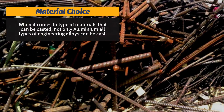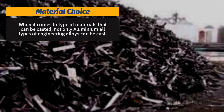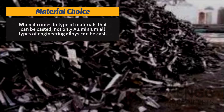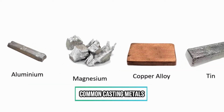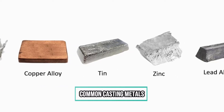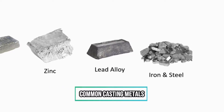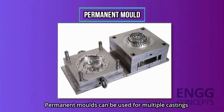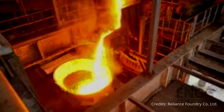Another advantage is material choice. Not only aluminium — all types of engineering alloys can be cast. Some common casting metals are aluminium, magnesium, and copper alloys. Other materials include tin, zinc, and lead alloys. Iron and steel are also cast in graphite molds. Permanent molds, which last more than one casting, have a limited life before wearing out. Many materials can only be processed by casting because of their metallurgical considerations.